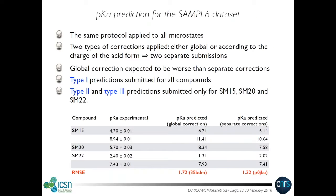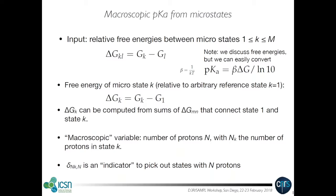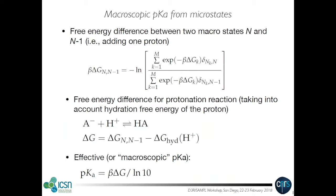We applied this protocol to all microstates using both types of correction and made two separate submissions. We expected the global correction to perform worse than the separate corrections. We submitted type-one predictions for all compounds, and type-two and type-three only for the three simplest compounds due to time constraints. The results show an RMSE of about 1.7 for the global correction and 1.3 for the separate corrections, which is in line with our expectations.